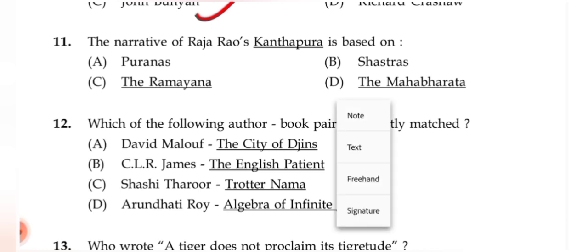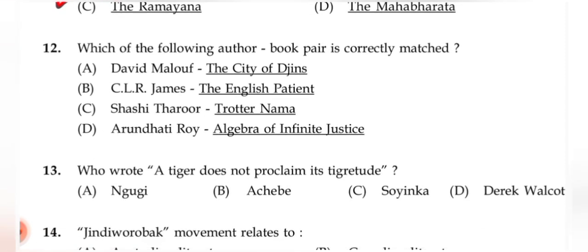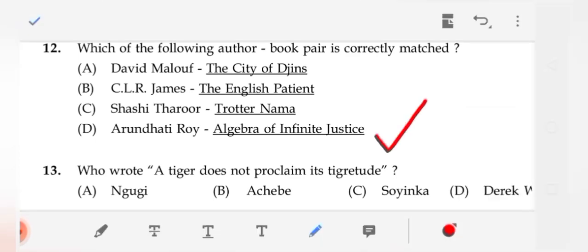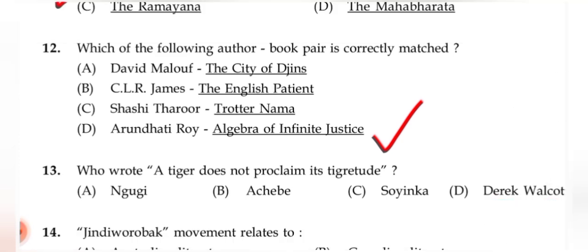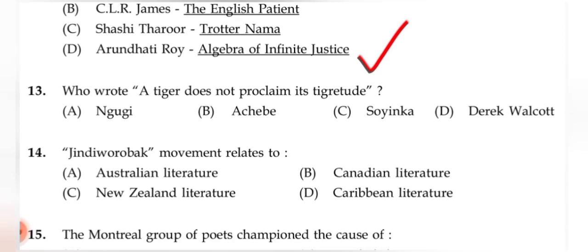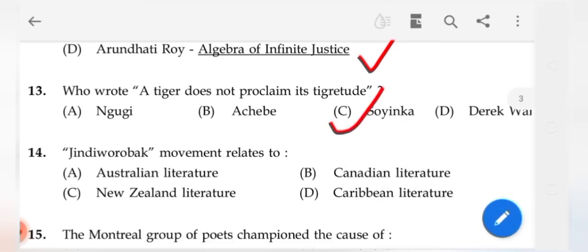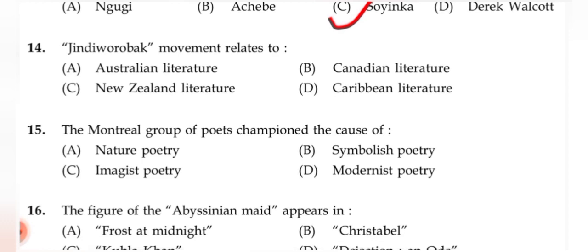Question 10: Who was the last of the Christian humanists? The correct answer is (C) John Bunyan. Question 11: The narrative of Raja Rao's 'Kanthapura' is based on (A) the Puranas. Question 12: Which author-book pair is correctly matched? The correct answer is (D) 'Algebra of Infinite Justice' by Arundhati Roy. Question 13: Who wrote 'A Tiger Does Not Proclaim Its Tigritude'? The correct answer is Wole Soyinka, an African writer.